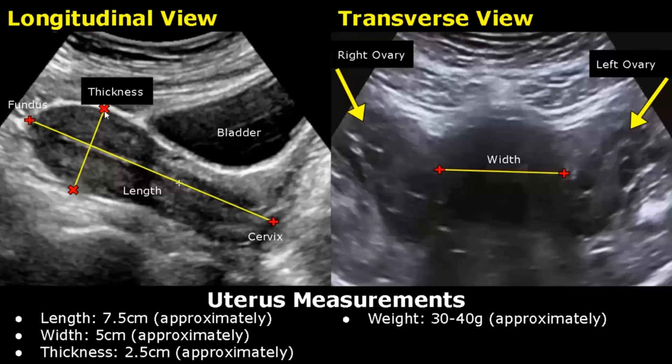In the transverse view, we can measure the width of the uterus. We can also see the right and left ovaries. The normal uterine width is around 5 cm.